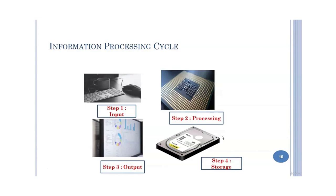In step number one, the input step, the computer accepts data from either a user or some program in order to process it. In step number two, the processing step, the computer's processing components — for example the central processing unit — perform certain operations on the data based on instructions provided by the user or a program.